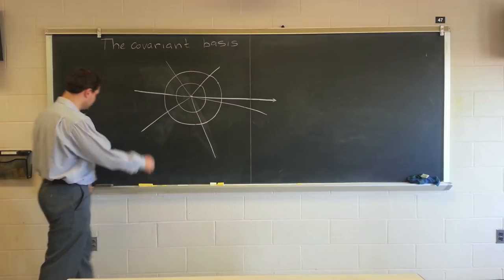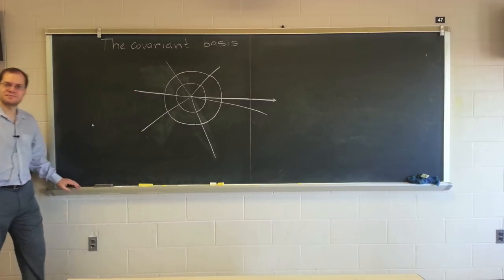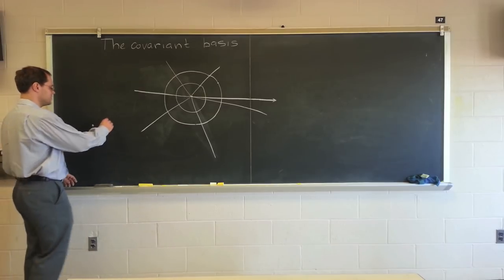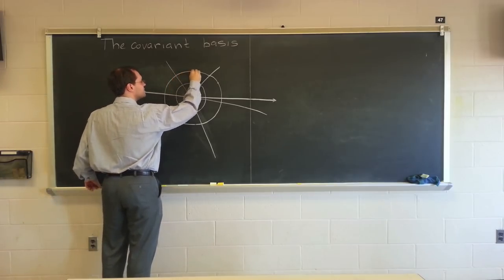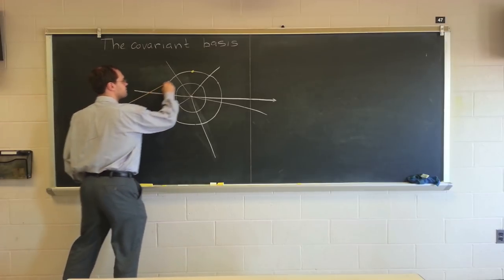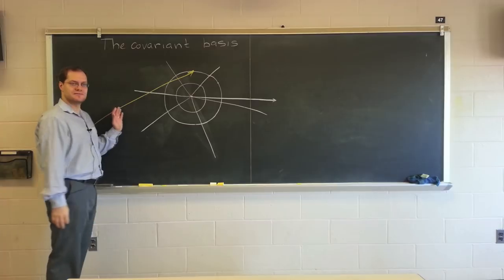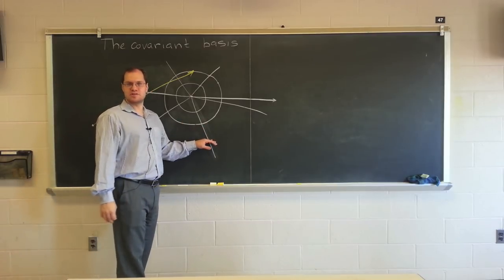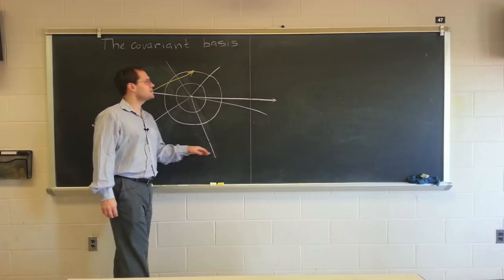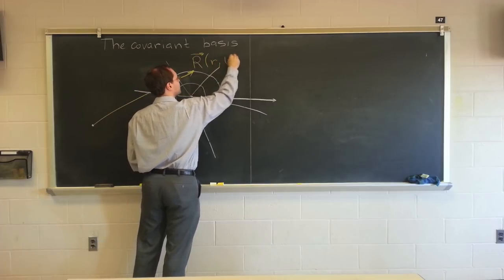It's done in the following way. We pick an arbitrary origin. Let's define our basis at this point. So you consider the position vector r. The position vector r was a perfectly well-formed notion before we introduced the coordinates. But now that we've introduced the coordinates, r becomes a function of two variables: r and theta.